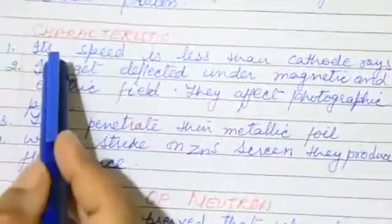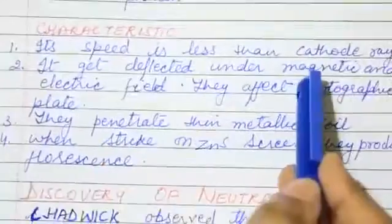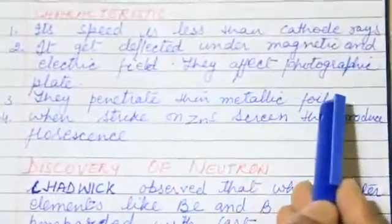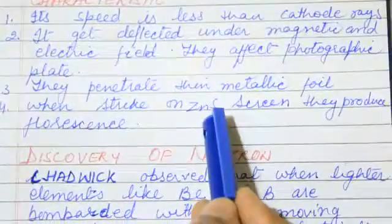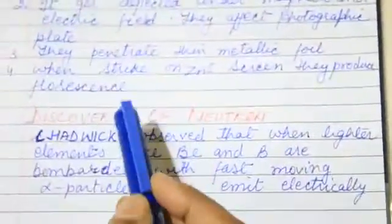Characteristics of proton is its speed is less than cathode ray. It gets deflected under magnetic and electric field. They affect photographic plate. They penetrate thin metallic foil. They strike zinc sulfide screen and produce fluorescence. The bright light is known as fluorescence.